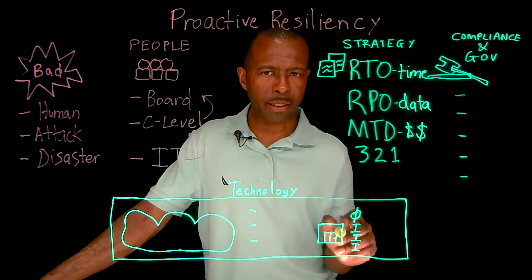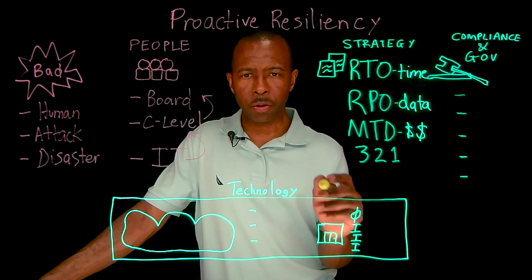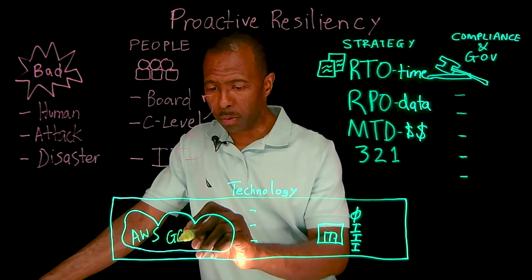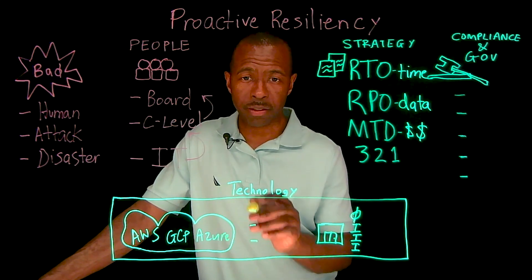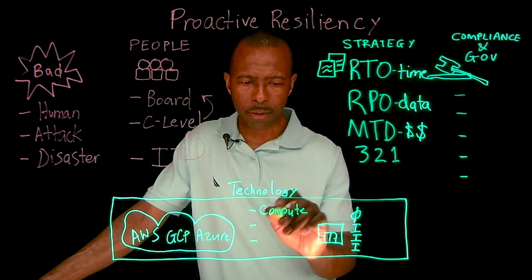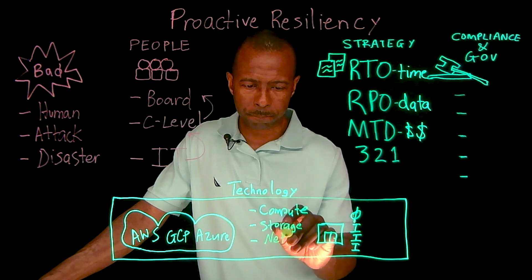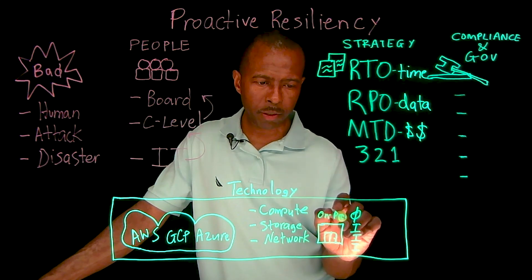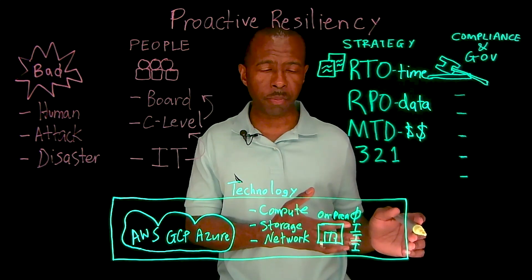As you are implementing technology within your data protection strategy and moving to a proactive resiliency approach, if you're storing data in the cloud — whether it's AWS, Google, or Microsoft — those workloads still need to be protected, including SaaS applications, because you still have compute, storage, and network that data flows over. Data sitting on-prem also needs to be protected and included within your proactive resiliency approach.